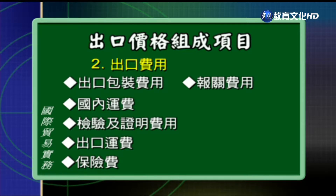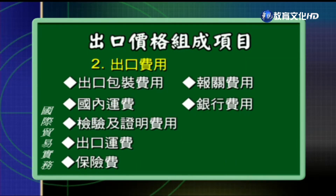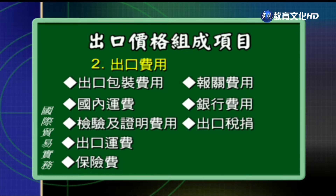第六项是报关的费用，它包括了仓租以及报关行的手续费，有时候也包含理货工资、验关车资、验关工资以及传输费等等，在报关阶段所发生的各项费用。第七个是银行的费用，像是出口的押汇手续费、托收手续费、汇款的手续费等等。第八个项目是出口税捐，我们出口不课征关税，但是要由海关来代征推广贸易服务费以及商港服务费。